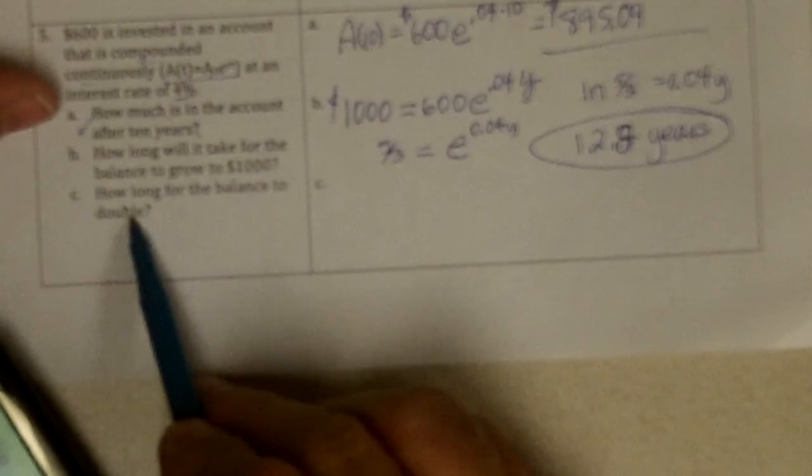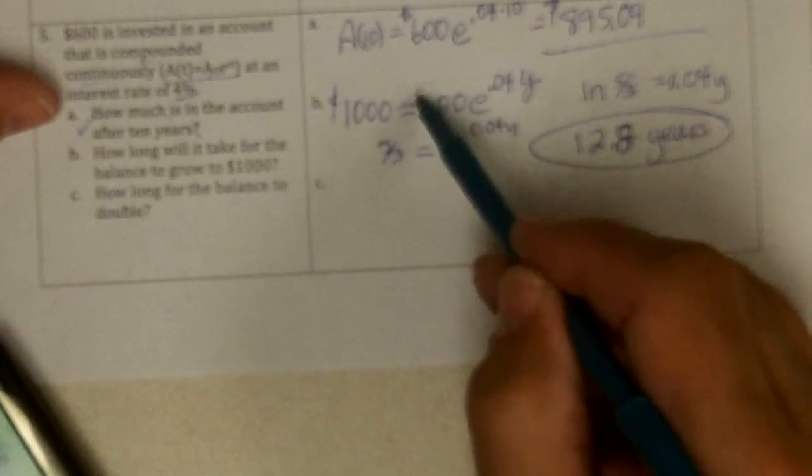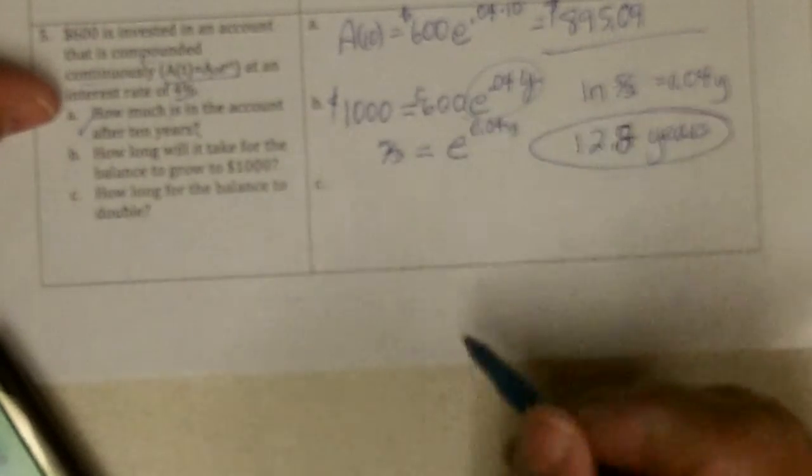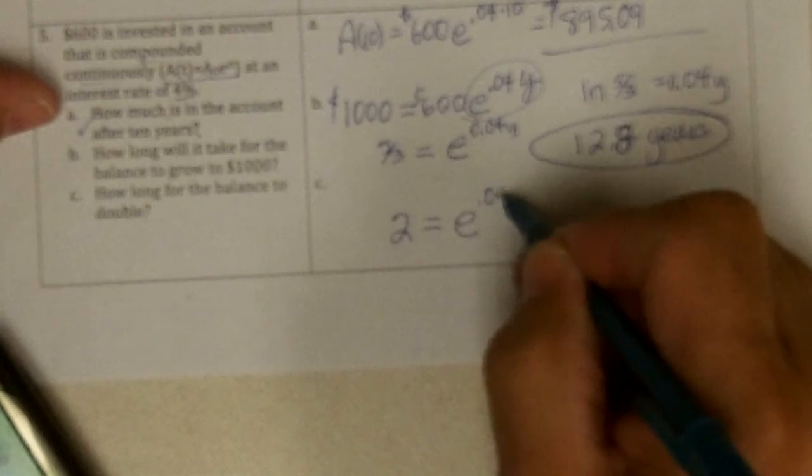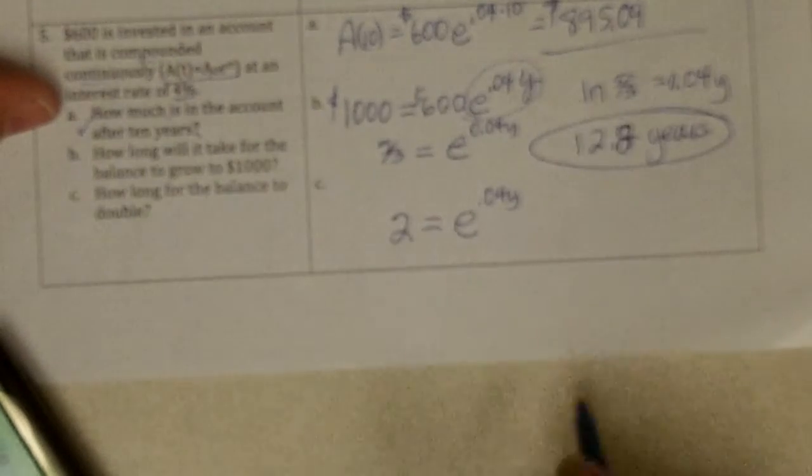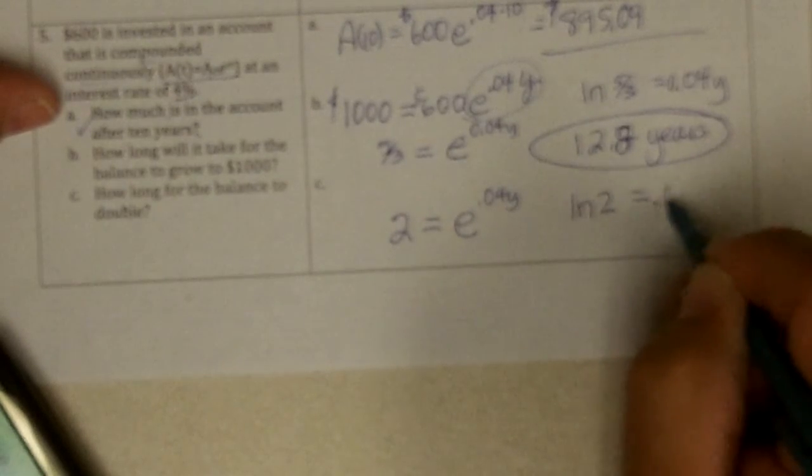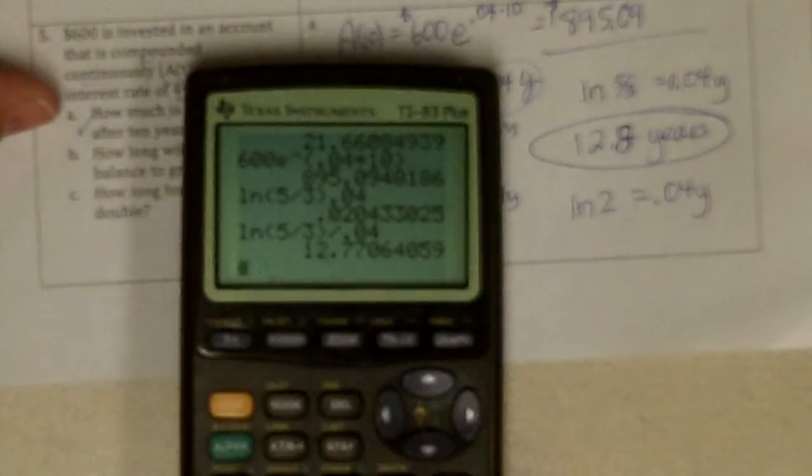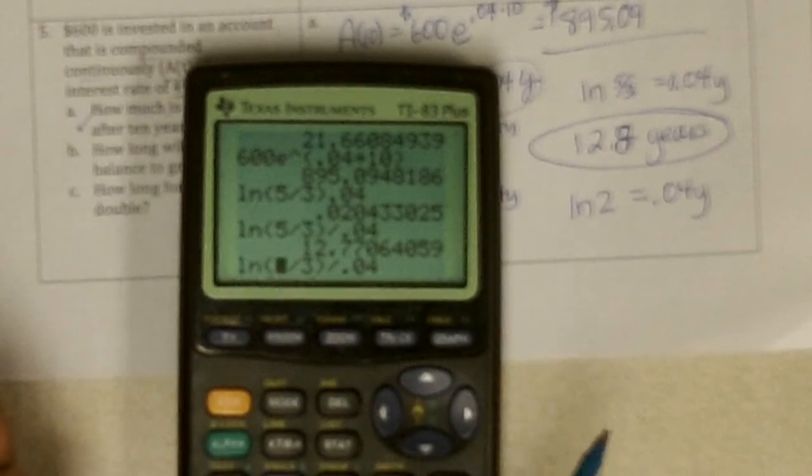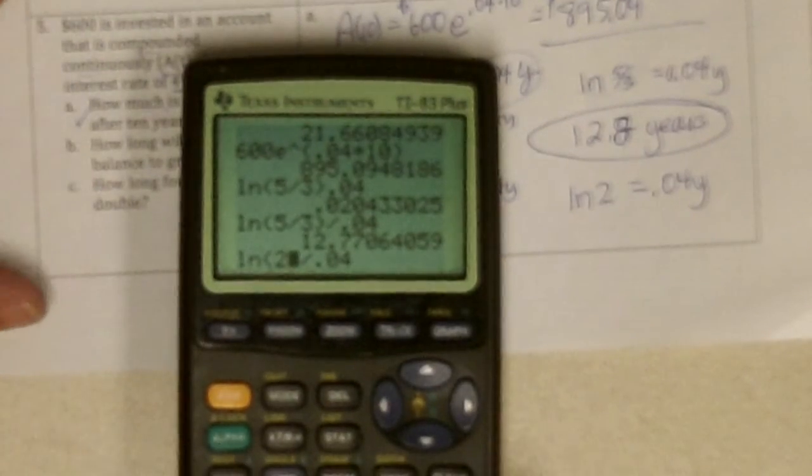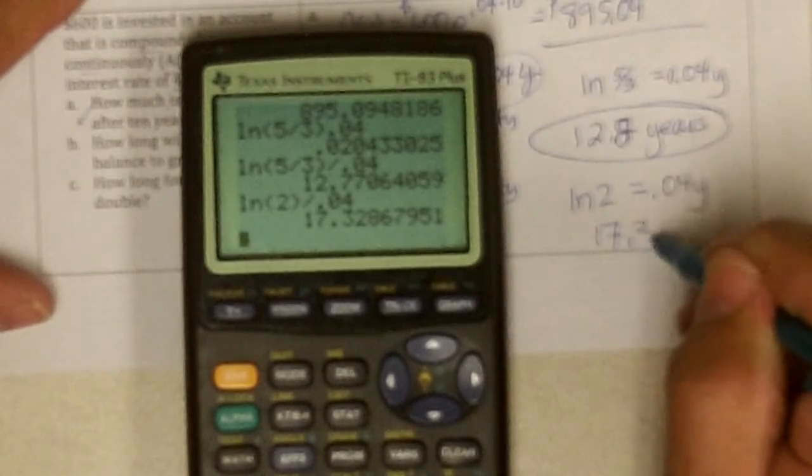And then, how long for the balance to double? Well, to double, it doesn't matter what I start with, this would have to be 2. So I'm trying to get 2 to be e to the 0.04y. So it's going to be Ln 2, equals 0.04y. And I'm going to get pretty much the same thing we had as before, except this will be now 2. Ln 2, divided by 0.04, and that is 17.3 years.